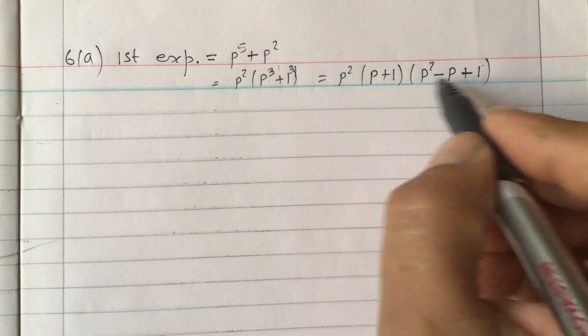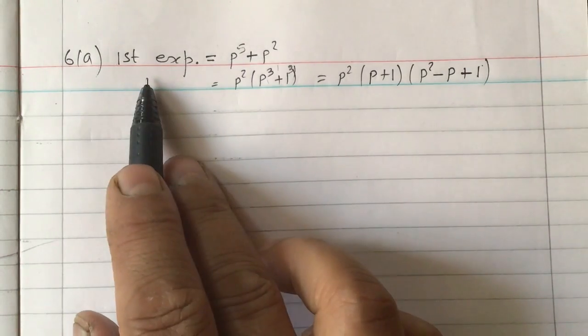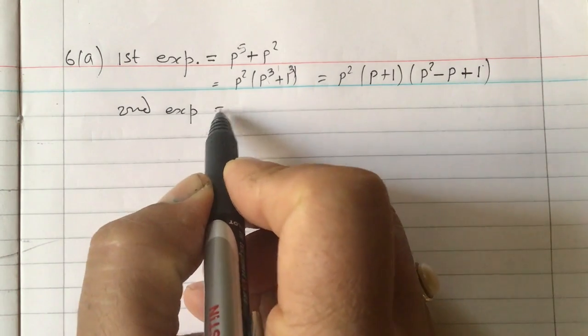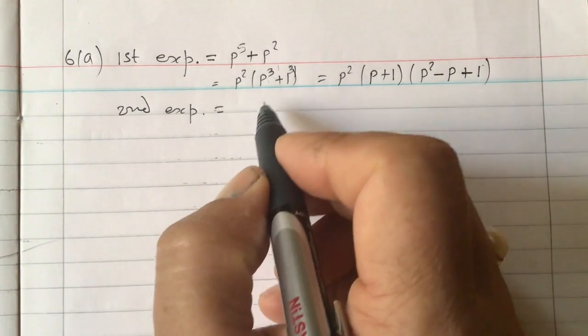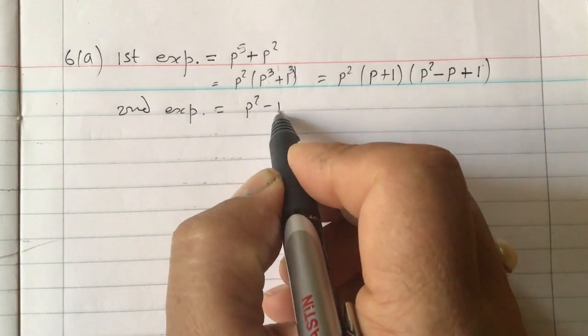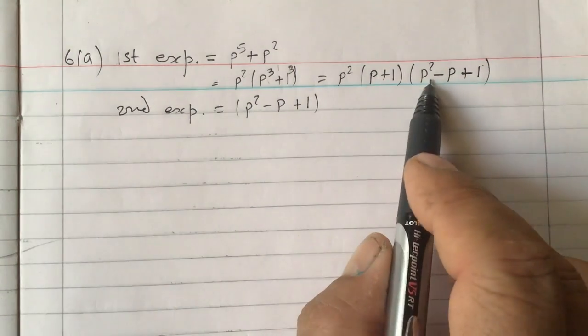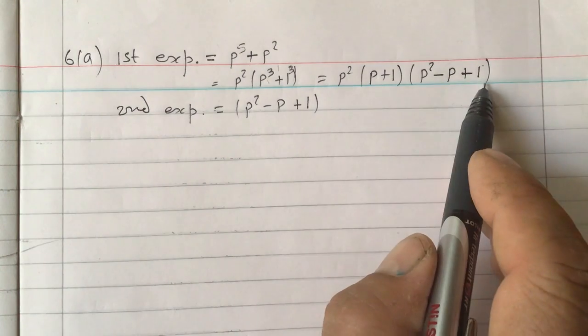So these are the 3 factors from this first expression. Now the second expression, in second expression we have got p square minus p plus 1, this no need to factorize because we have already got the same, look at it, these 2 are same.